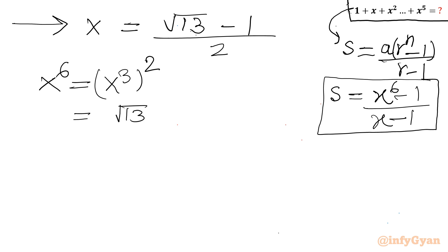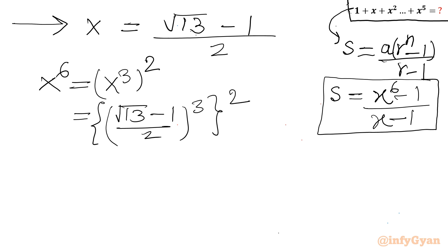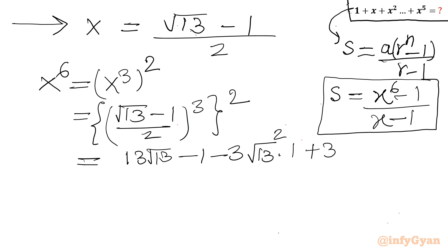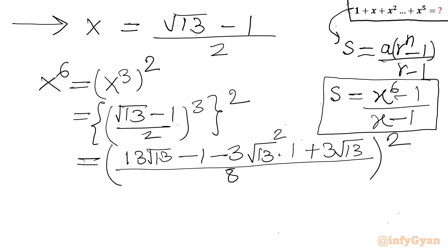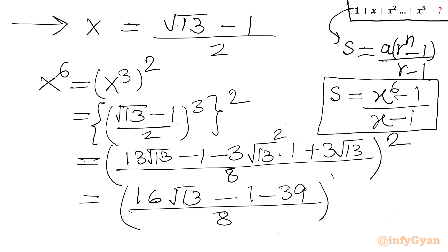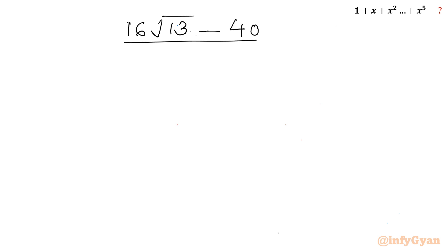So I can write ((root 13 minus 1) over 2) cubed, whole squared. Let us consider this cube first: (root 13 minus 1) whole cube using the (a minus b) cubed formula gives 13 root 13 minus 1 minus 3 squared times 1 plus 3 squared root 13, all divided by 8. Then we square the result. Simplifying the first and last terms gives 16 root 13, and this becomes minus 1 minus 39 over 8, whole squared. So x to the power 6 will be (16 root 13 minus 40) over 8, whole squared.